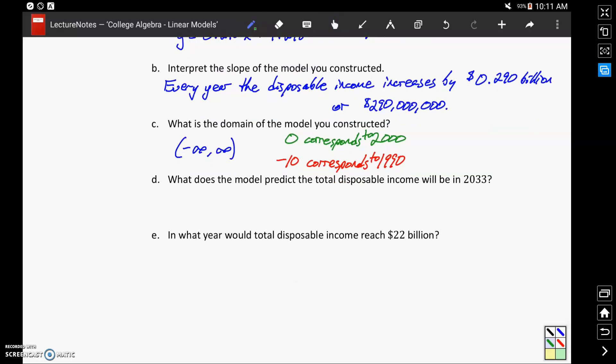In Part D, we're asked, what does the model predict the total disposable income will be in 2033? So we could evaluate our model for X equals 33, which would be 33 years after the year 2000, plus 7.298 would give us approximately 16.868 billion dollars. So this X coordinate is a value that wasn't in our original table, but using our model, we can make that prediction.